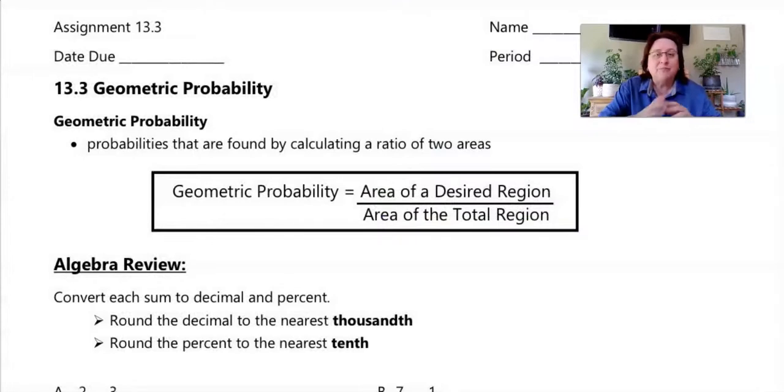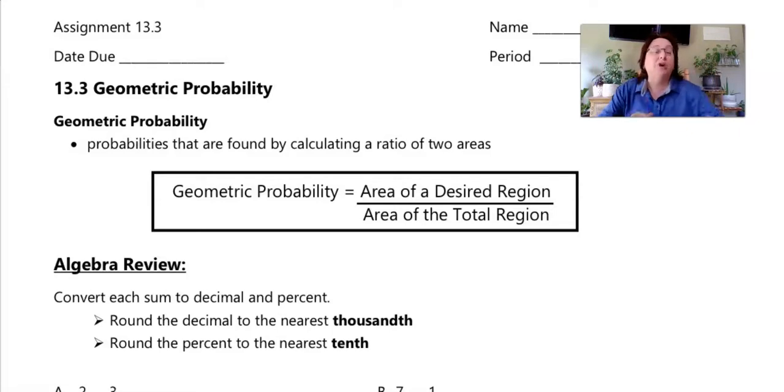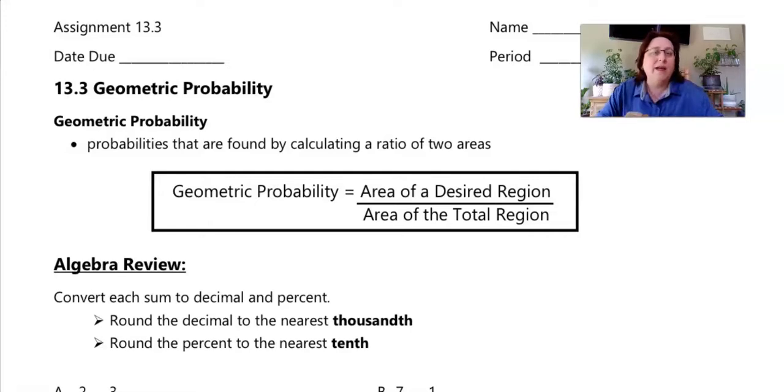Today we're going to explore geometric probability — this is why probability is in geometry. We're going to look at areas and use those areas to help us calculate the probability of landing in a certain space. To calculate geometric probability, you find the area of the desired region and divide it by the area of the total region. This is very similar to what you did with the dartboard activity.